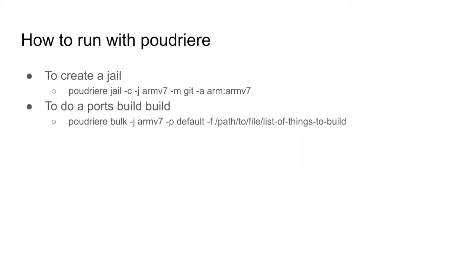Poudriere supports this build setup. With poudriere you can create a jail that has ARMv7 binaries in it, so you can run a fully emulated user-mode jail on an AMD64 box. Poudriere also has optimizations so that we build our compilers and toolchain natively for the host machine but have them produce binaries for the target by default, which speeds up builds substantially. Sean Bruno and Stacy Son talked about this at BSDCan a number of years ago.